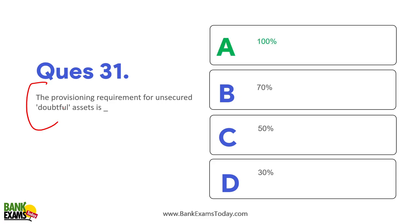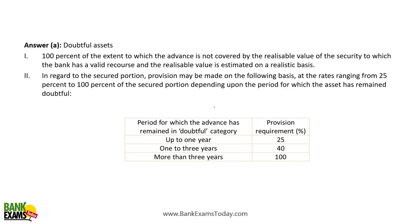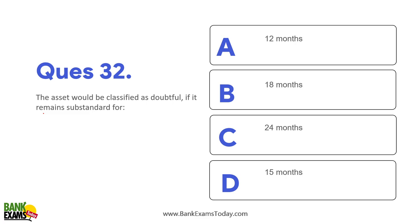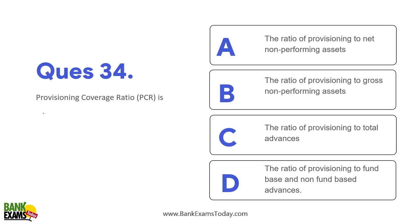The provisioning requirements for doubtful assets are: up to one year — 25%; one to three years — 40%; more than three years — 100%. For substandard assets it was 15%. An asset is classified as doubtful if it remains substandard for more than 12 months. The provisioning coverage ratio is the ratio of provisioning to gross NPA.